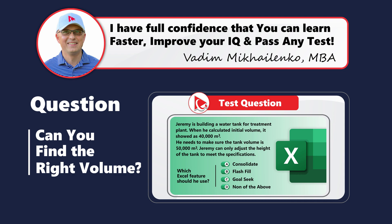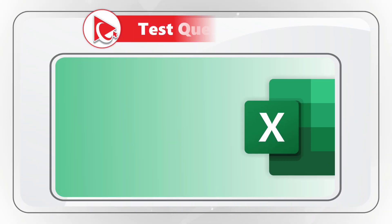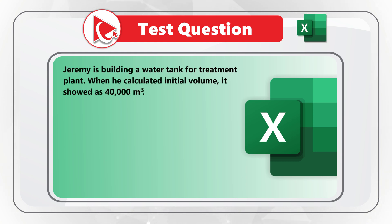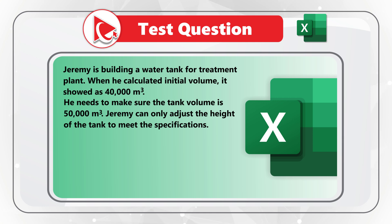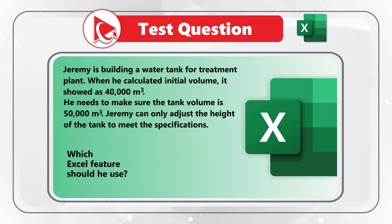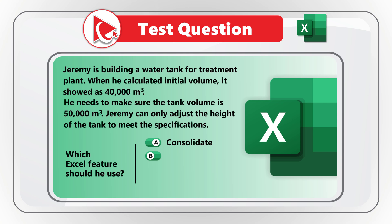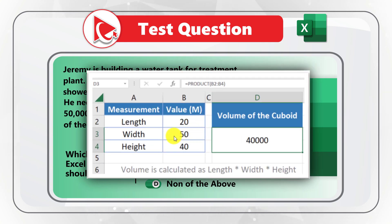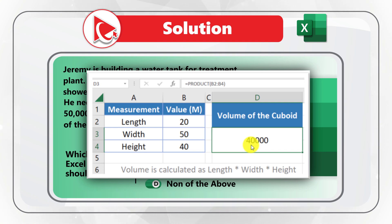Here's an amazing question to test your knowledge of Excel features. Jeremy is building a tank for a treatment plan. When he calculated the initial volume it showed as 40,000 cubic meters. He needs to make sure the tank's volume is 50,000 cubic meters, and he can only adjust the height. Which Excel feature should Jeremy use? Choices are: A, Consolidate; B, Flash Fill; C, Goal Seek; D, None of the above. The snapshot shows length, width, and height measurements, with volume calculated as the product of range B2 through B4.